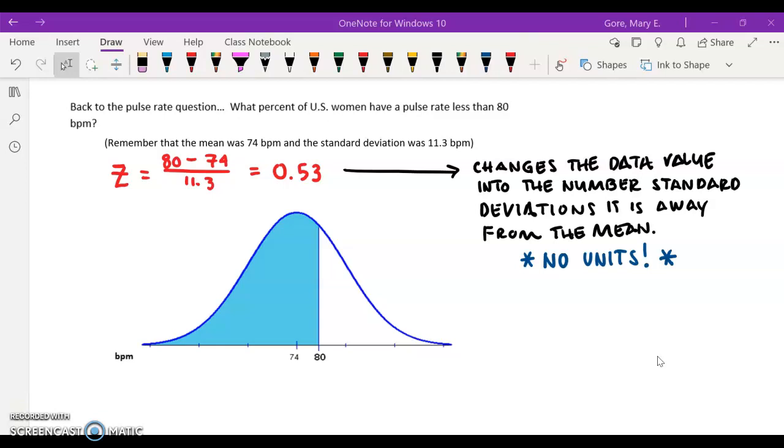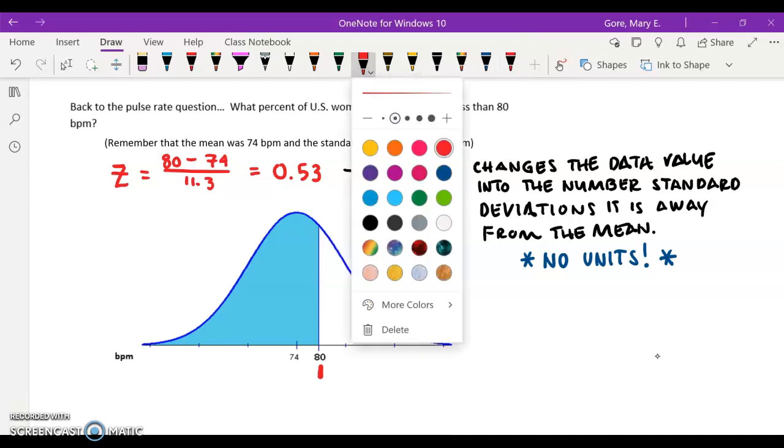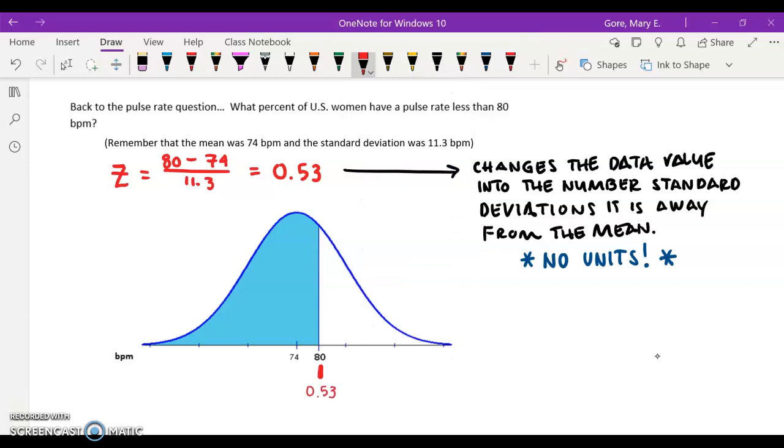What I did here was I quickly recomputed the z-score we were working with. 80 beats per minute is about half a standard deviation away from the mean of 74 beats per minute, because I see 0.53. So z equals 0.53. There we are.